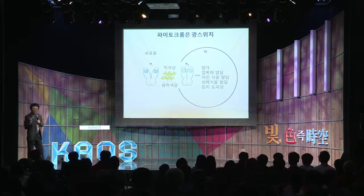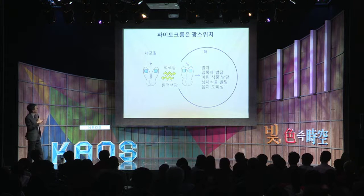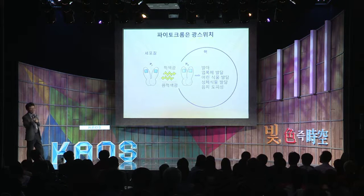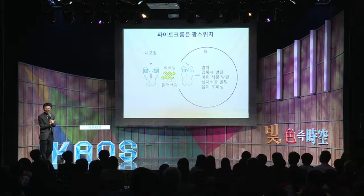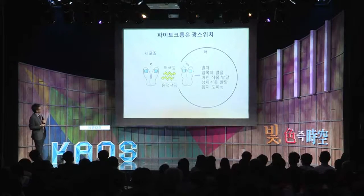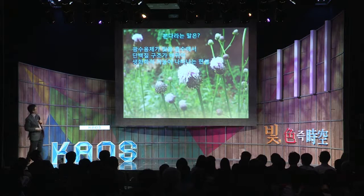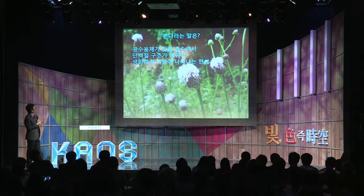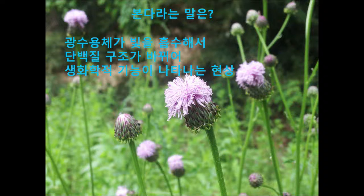파이토크롬은 빛에 의해서 온/오프 되는 스위치예요. 적색광을 주면 PFR로 액티브해지고 활성화가 되고, 원적색광을 주면 PFR에서 싹 바뀌면서 off 상태로 바뀌어요. 이것은 계속 일어날 수 있어요. on 됐다가 off 됐다가, 마치 스위치를 turn on 시켰다가 turn off 시켰다 하는 것처럼 할 수 있습니다. 그래서 '본다'라는 말은, 광수용체가 빛을 흡수해서 단백질 구조가 바뀌고 생화학적 기능이 바뀌어서 나타나는 현상이다 라고 말할 수 있습니다.